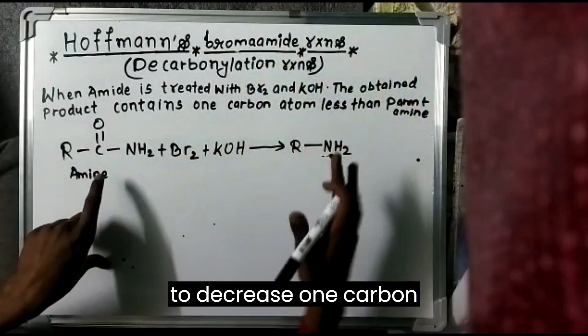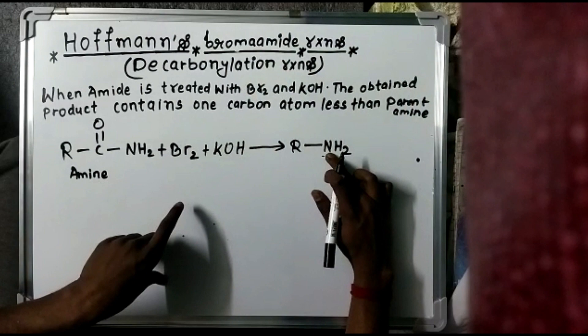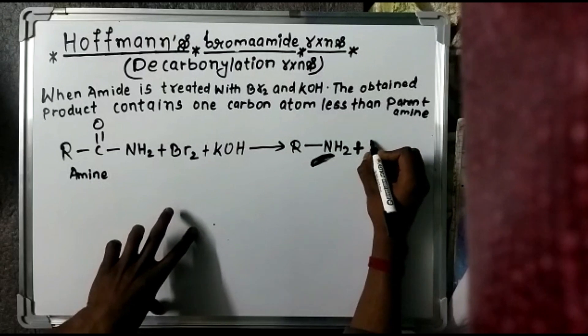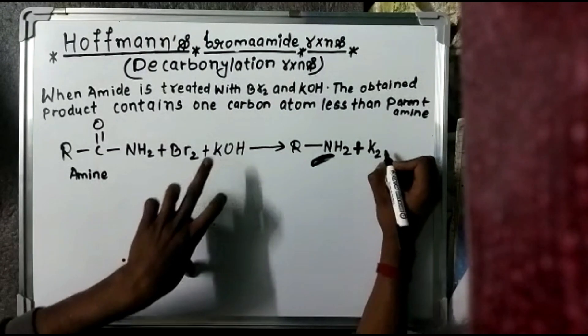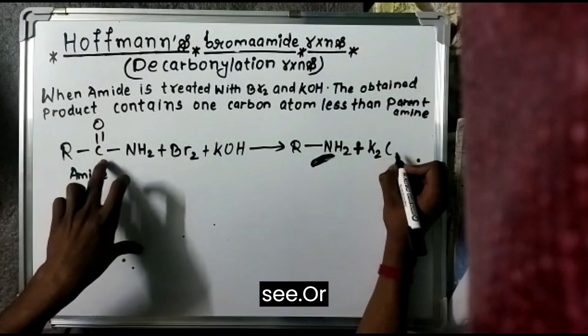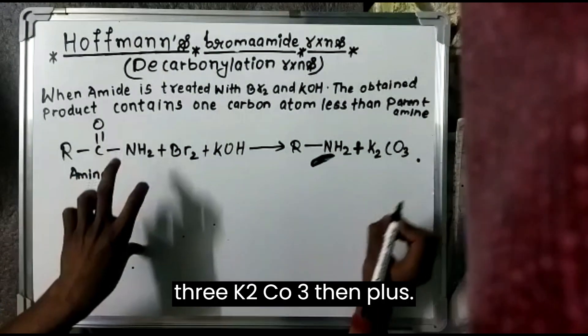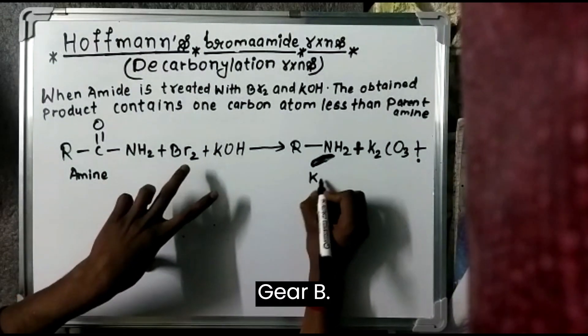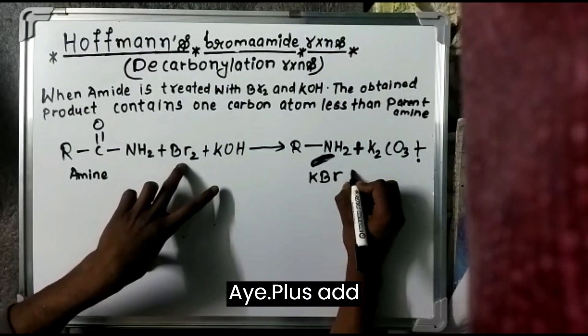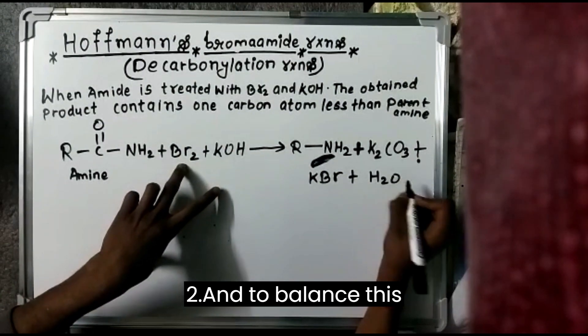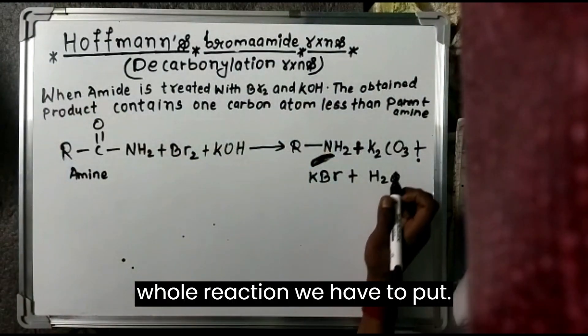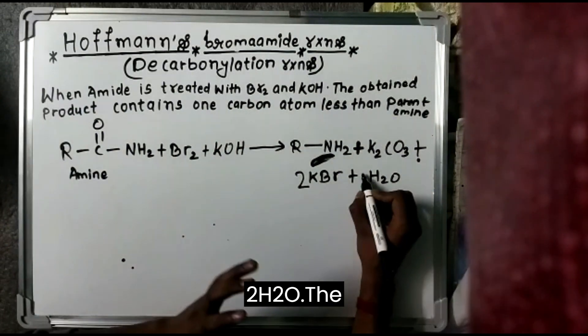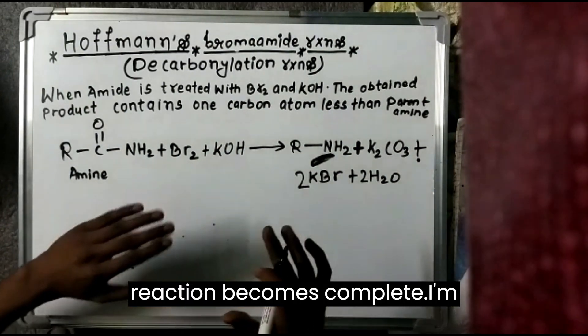Then what happens is plus K2CO3, then plus KBr plus H2O. And to balance this whole reaction, we have to put 2KBr and plus 2H2O. The reaction becomes complete.